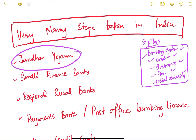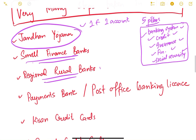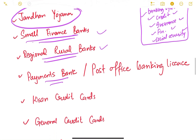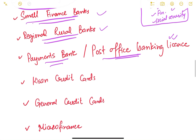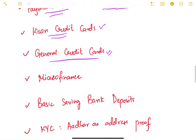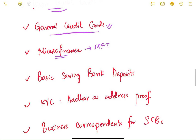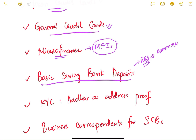One key scheme is the Pradhan Mantri Jan Dhan Yojana, in which zero-balance accounts were opened for all families that did not have even a single bank account — one account per family. Small Finance Banks and Regional Rural Banks were also opened. Payments Bank and Post Office Banking licenses were granted. Kisan Credit Cards and General Credit Cards were given to people.